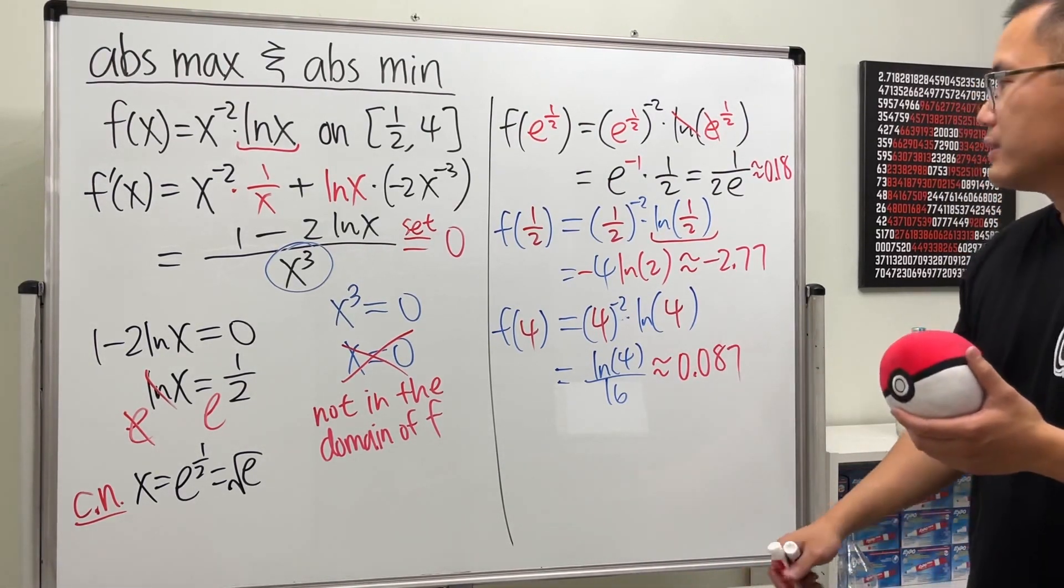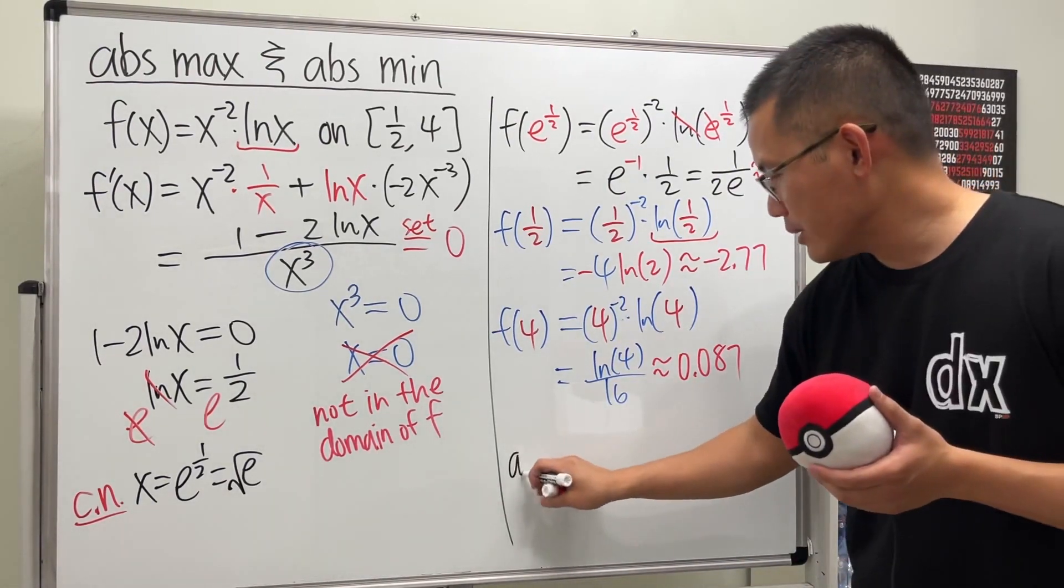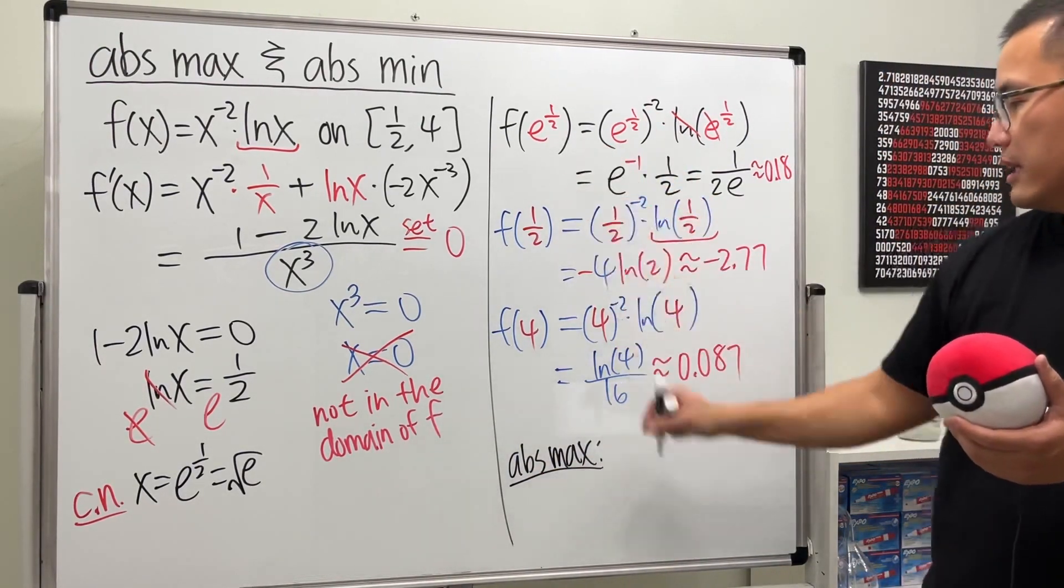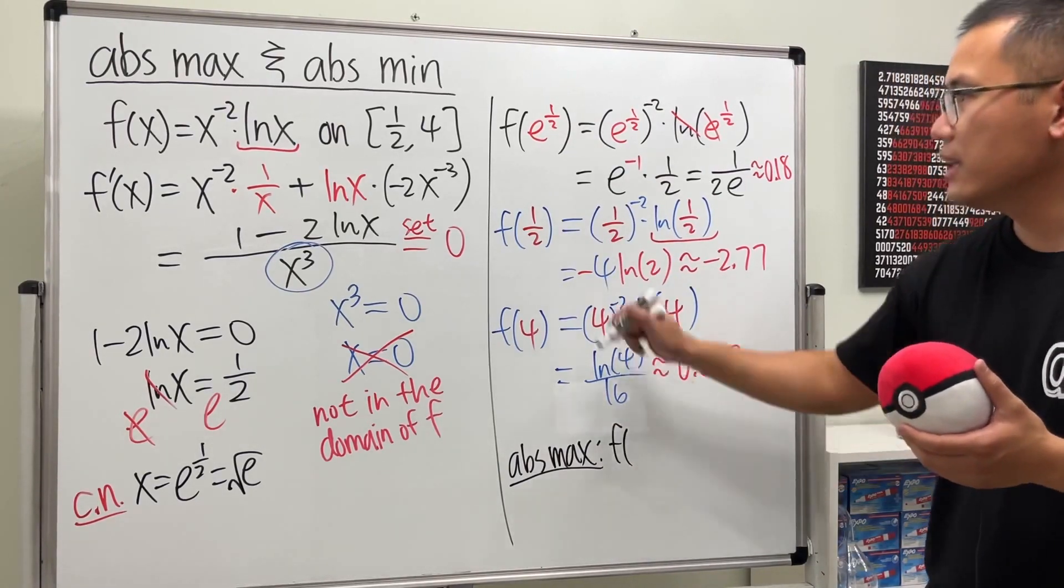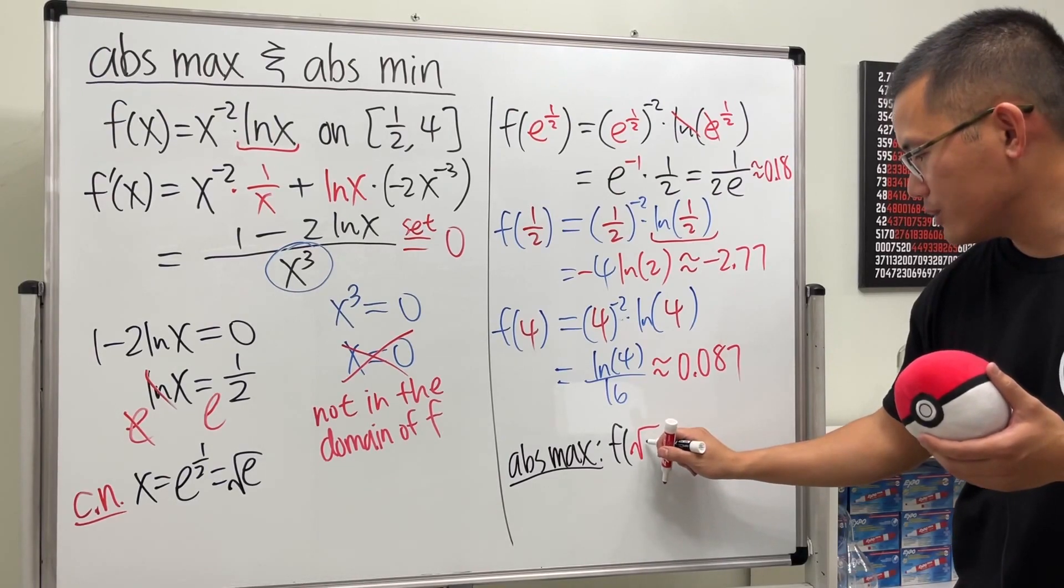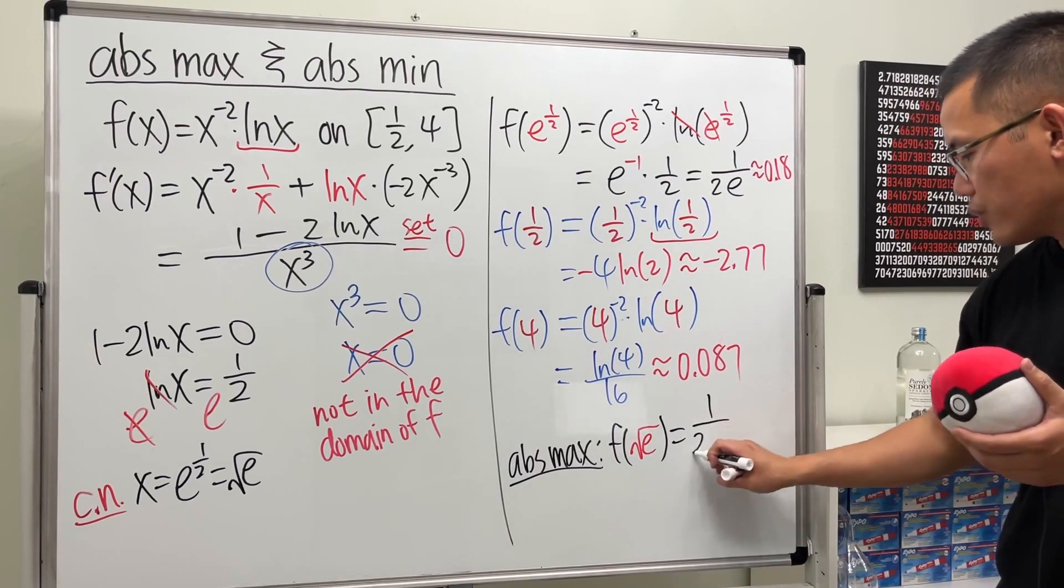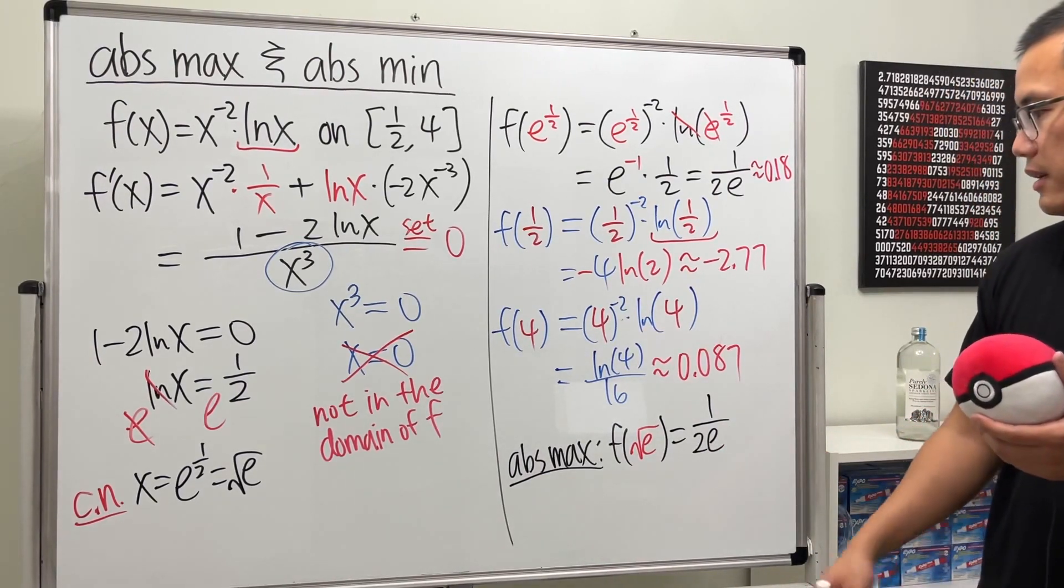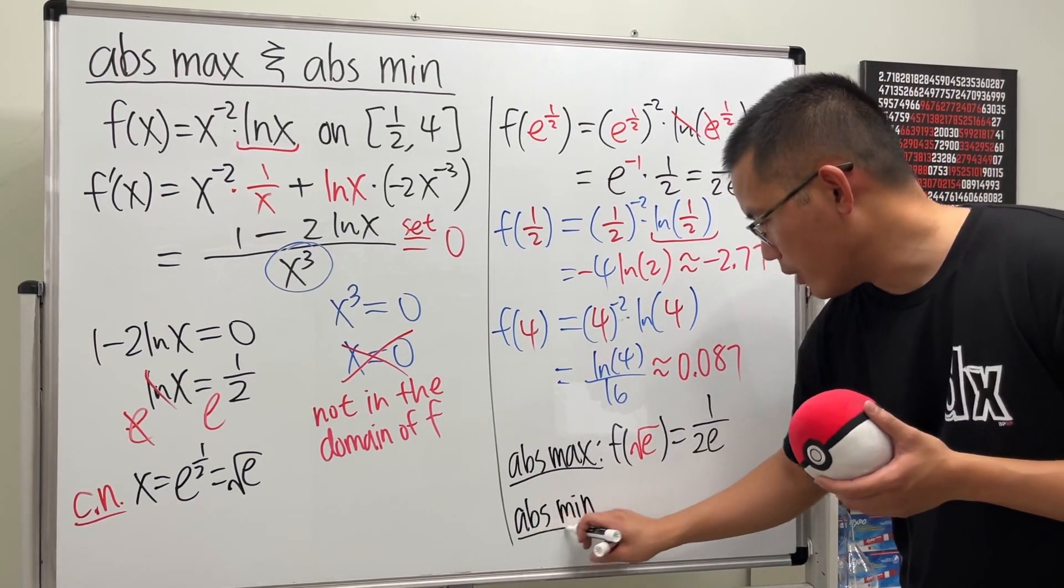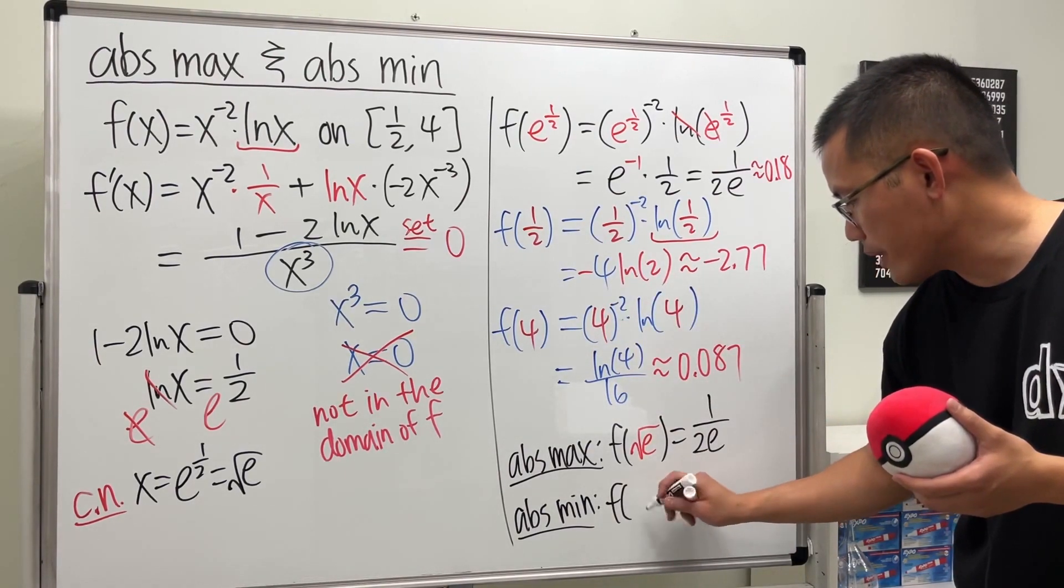So of course, this right here will actually be the biggest. And then this right here is the smallest. So absolute max is that. And then, just to make it fancy a little bit, let me write this as square root of e. Pretty cool, huh? Square root of e. And that will give us 1 over 2e.